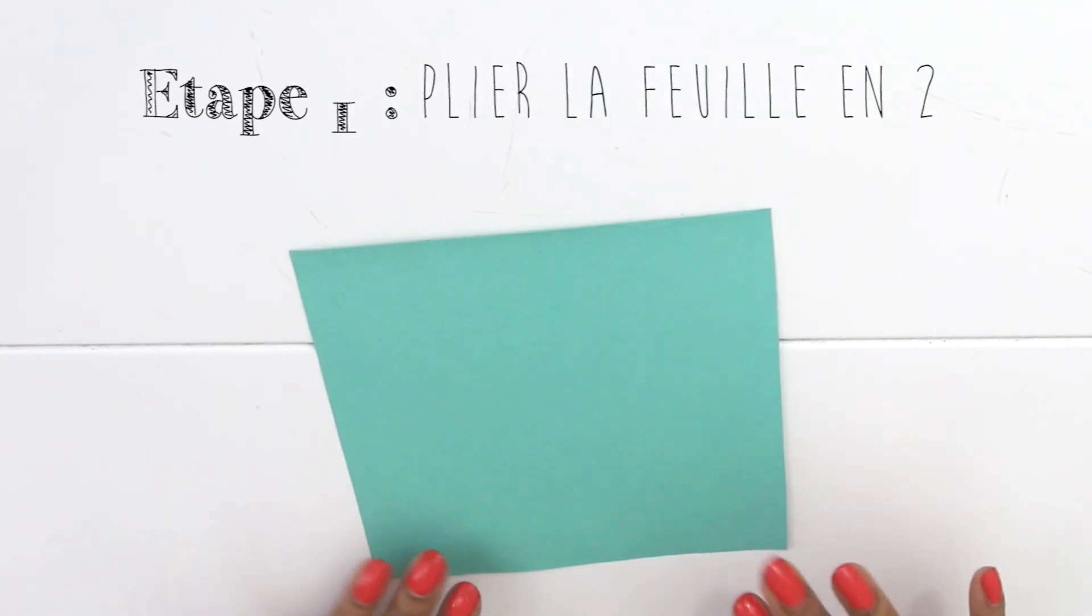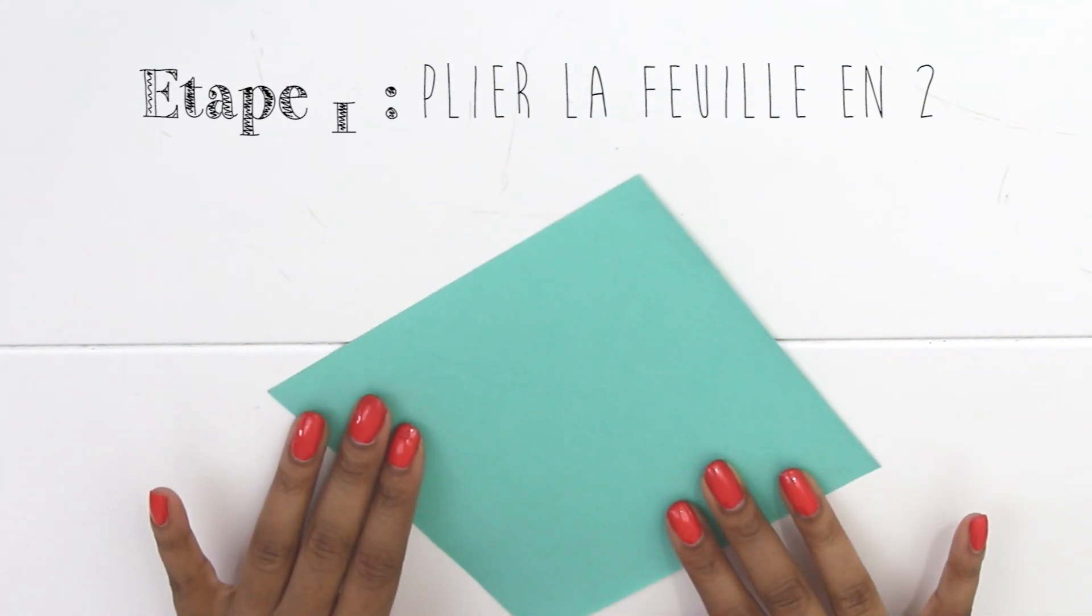Salut, c'est Florienne de l'appartement 9B. Aujourd'hui on va voir comment faire une étoile de Noël en origami.